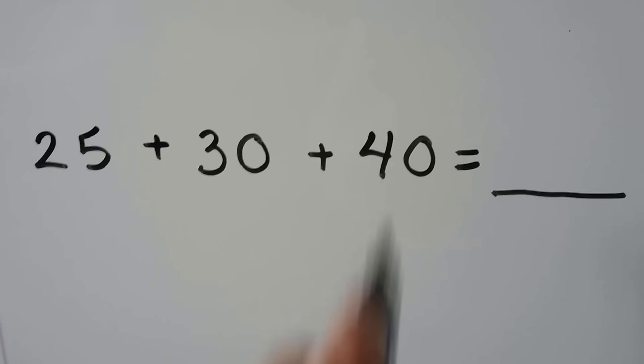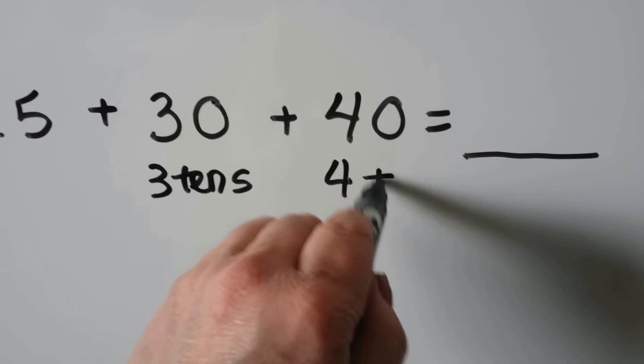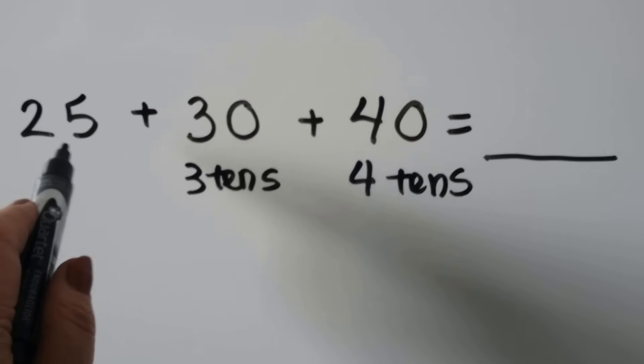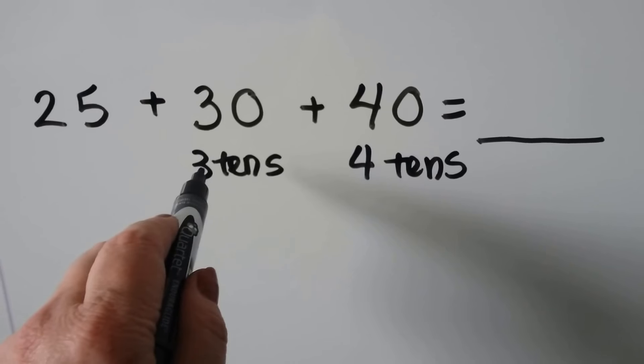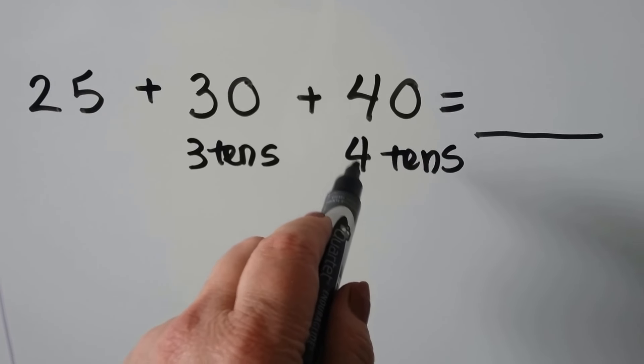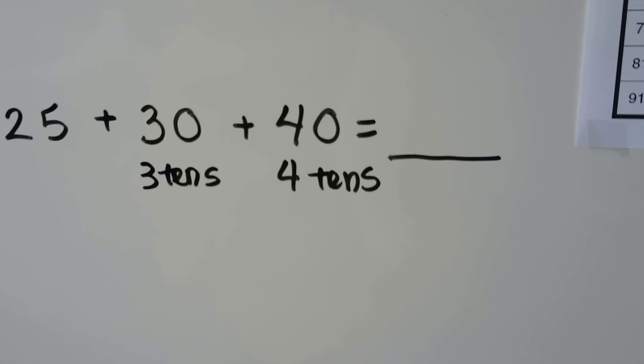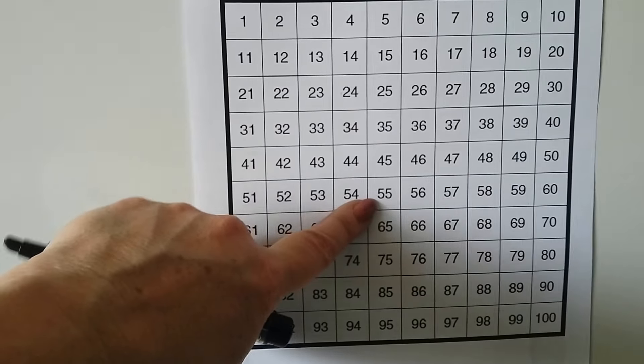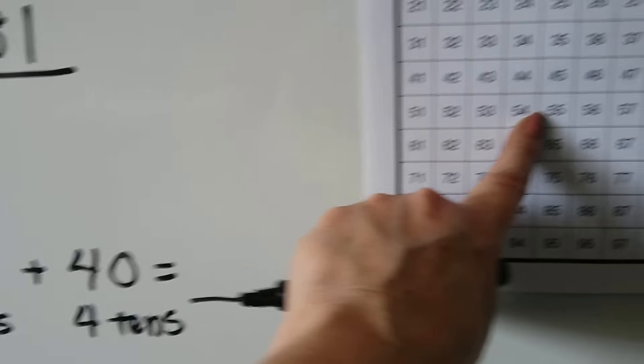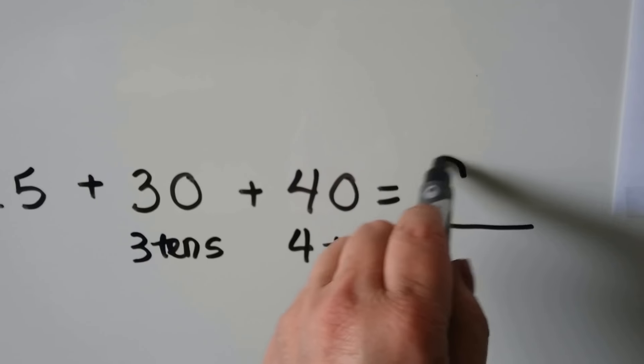We can add 3 addends. 30 is 3 tens. 40 is 4 tens. We can start at the 25, count down the column 3 hops for 3 tens, then count down the column 4 hops for 4 more tens. So we're going to start at 25 and do 3 hops, then 4 hops in the column. We start at 25. We do 3 hops. 1, 2, 3. That's 3 tens. Now we need 4 more tens. 1, 2, 3, 4. We land on 95.